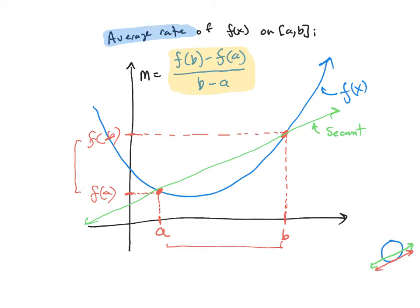There is another rate of change called instantaneous rate of change, and that is not the same as average rate of change. When they say average rate of change, you use this formula. Let's do a quick example before we move on to a further discussion of instantaneous rate of change and slope at a point.